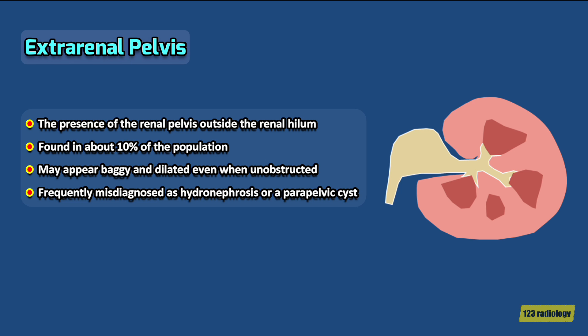Extrarenal pelvis is a normal anatomical variant. It refers to the presence of the renal pelvis outside the renal hilum. It is found in about 10% of the population. In this condition, the renal pelvis is unconfined by solid renal parenchyma, and consequently it may appear baggy and dilated even when unobstructed. Extrarenal pelvis is frequently misdiagnosed as hydronephrosis or a parapelvic cyst.